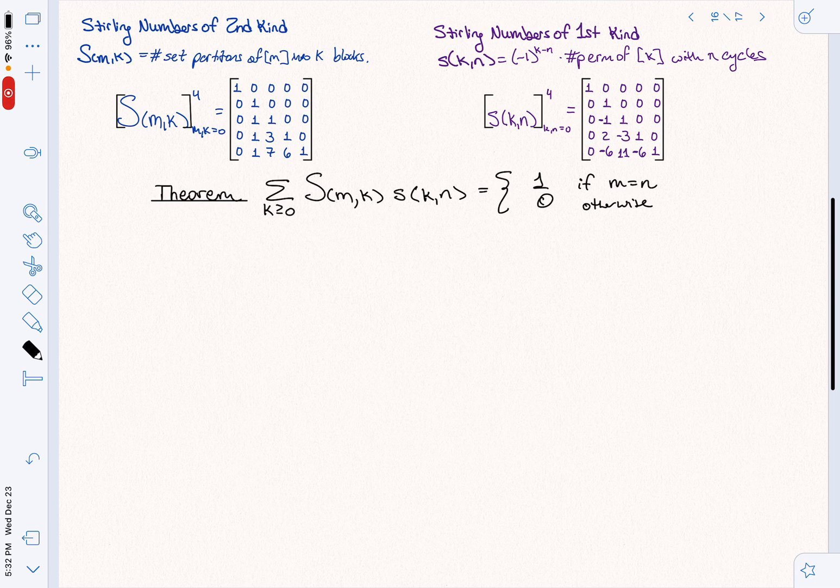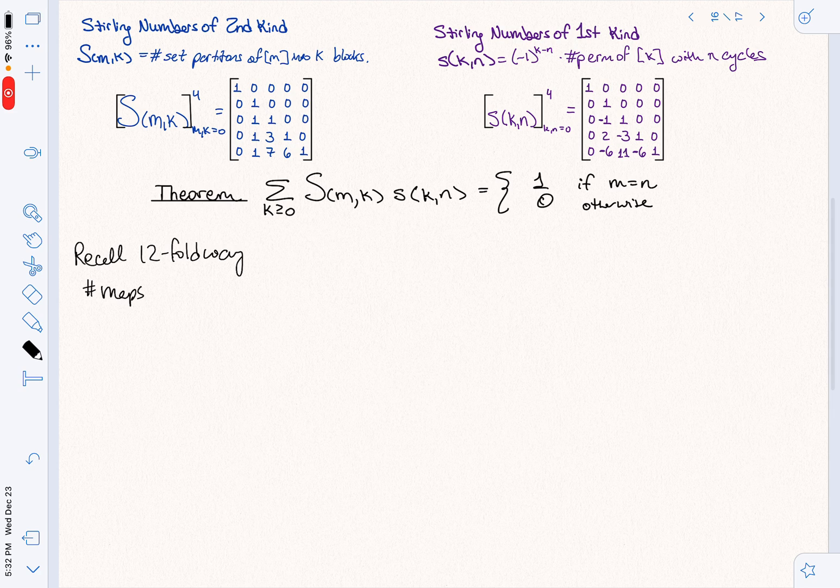So first of all, let's remember the 12-fold way. Recall the 12-fold way that we discussed a while back. One of the things that it said is that the number of maps from, say, a set of size M, number of maps F from a set of size M to a set of size X, here think of X as a number like 12, is X to the M.